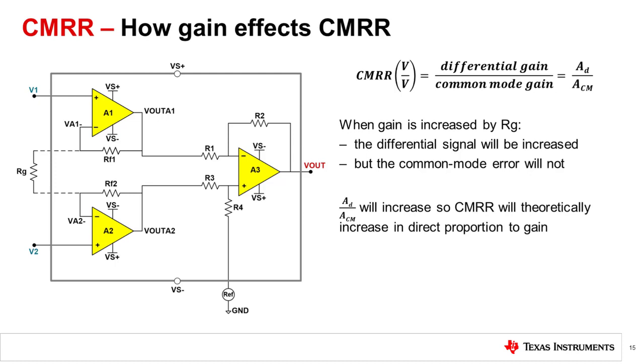That is, the differential gain AD increases with RG while the common mode gain ACM remains constant. So the ratio of the differential gain to the common mode gain will increase. Thus, CMRR will theoretically increase in direct proportion to gain. This is a very useful property, but does not exclude other non-ideal characteristics of op amps, for example, non-infinite open loop gain.